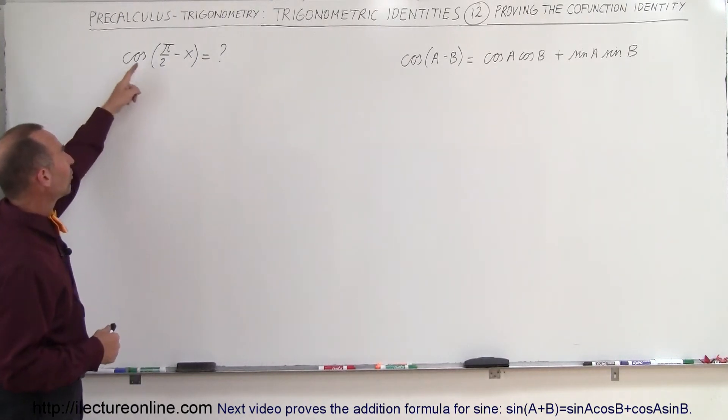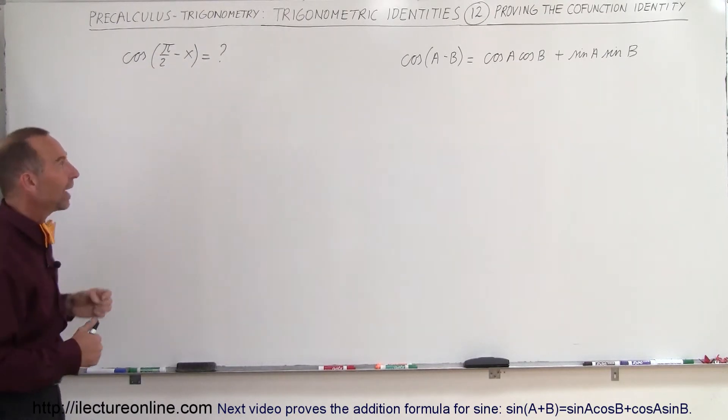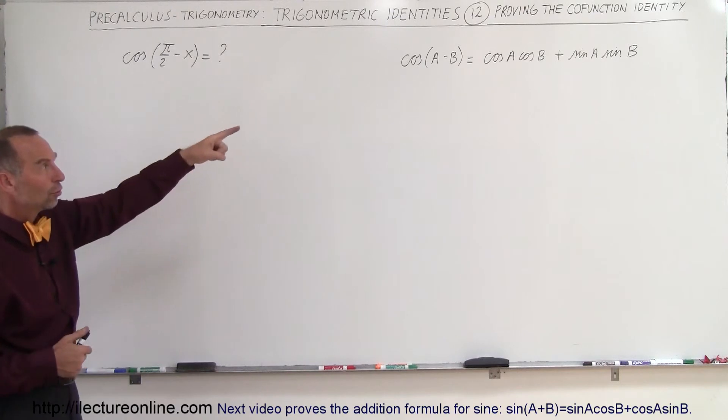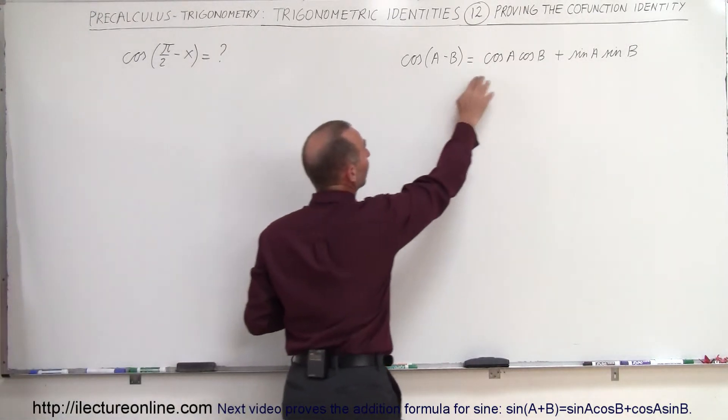Here we have the cosine of pi over 2 minus x, and we know that should be equal to the sine of x. We're going to use what we've proven so far, that the cosine of the difference of two angles is equal to this.